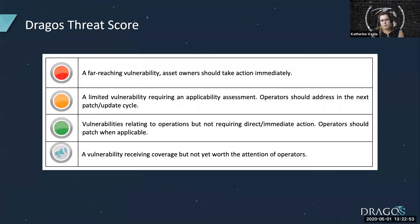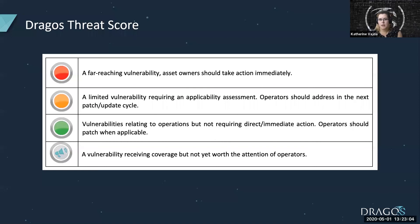Our reports get prioritized with the Dragos threat score — a simple color-coded system, and so do our vulnerabilities. In the vulnerability space, red means patch or mitigate immediately, orange is patch or mitigate in the next maintenance cycle, and green is within a year, whenever it works out for you.